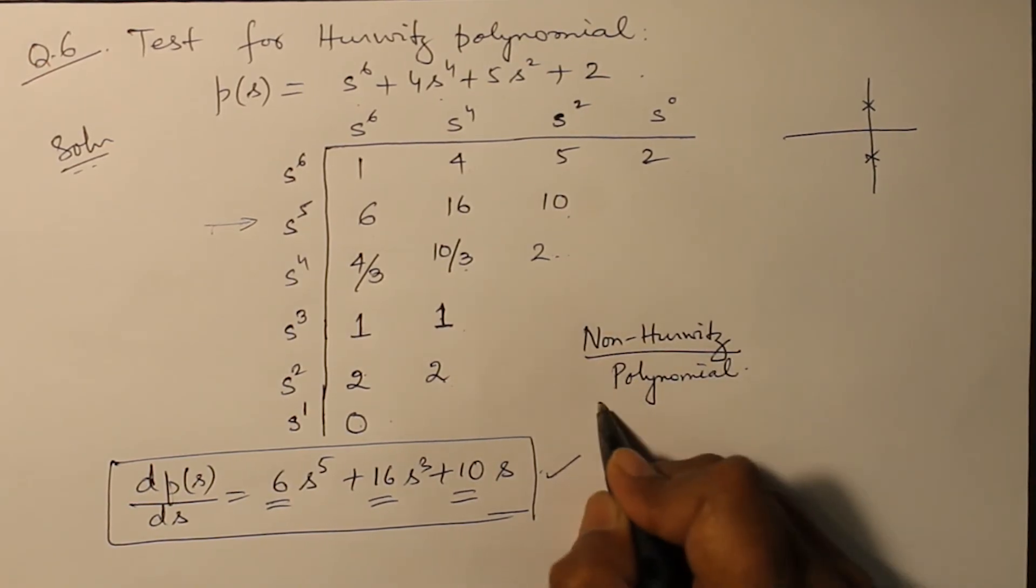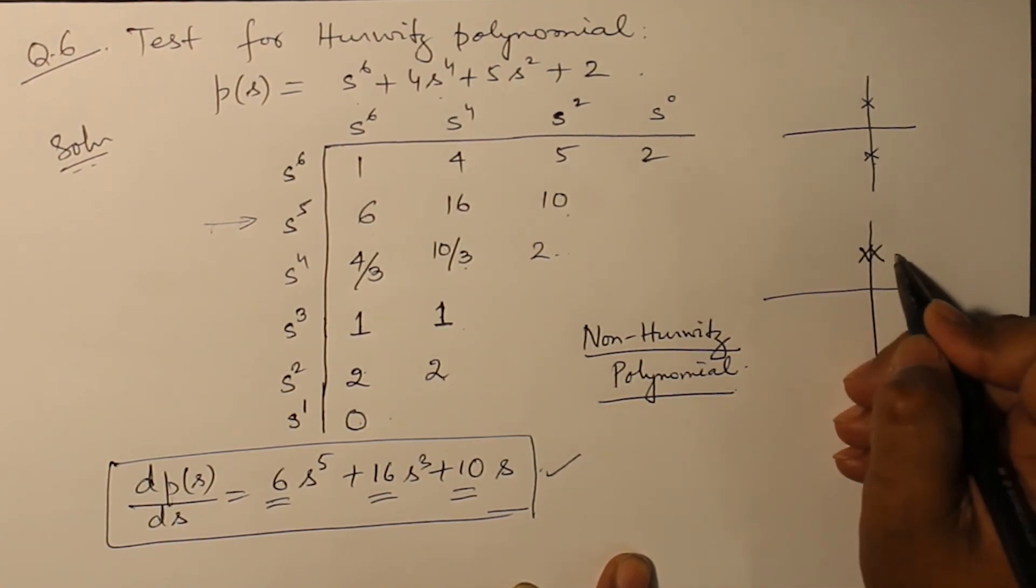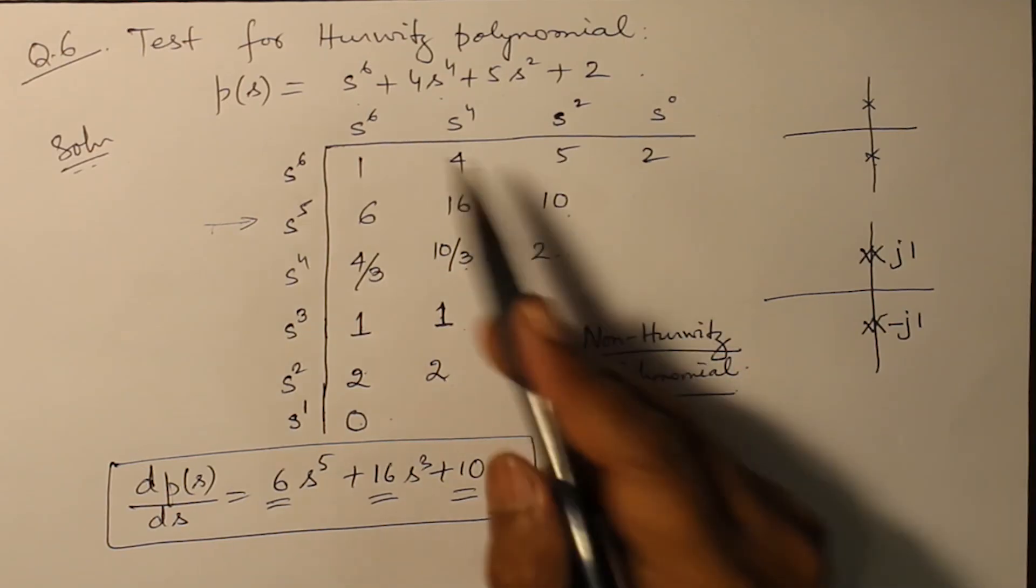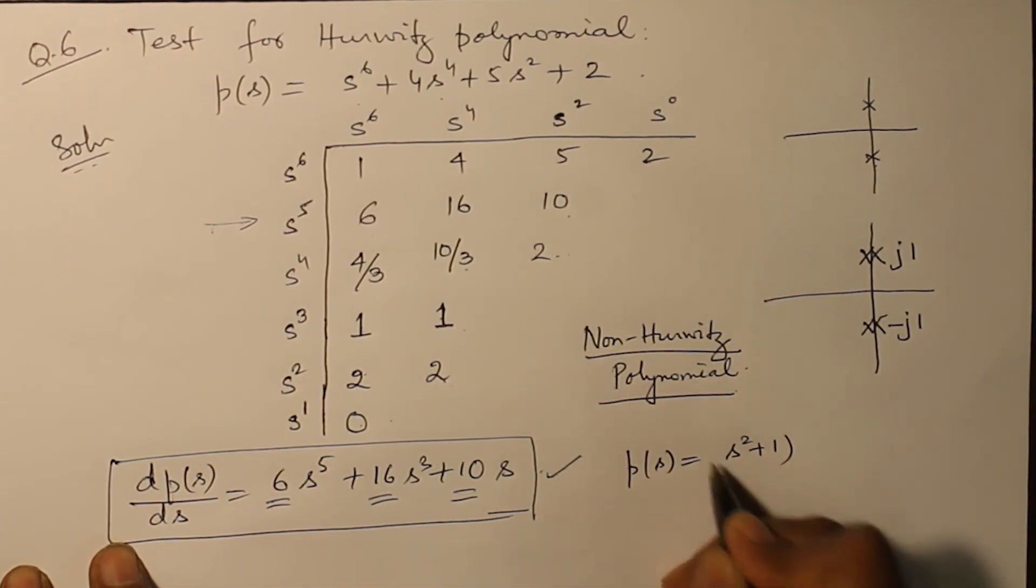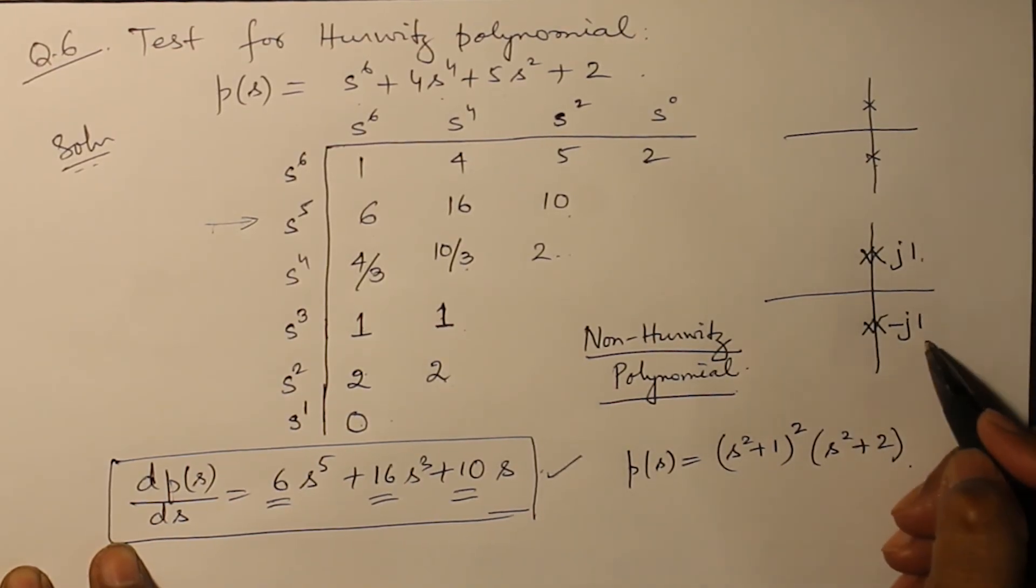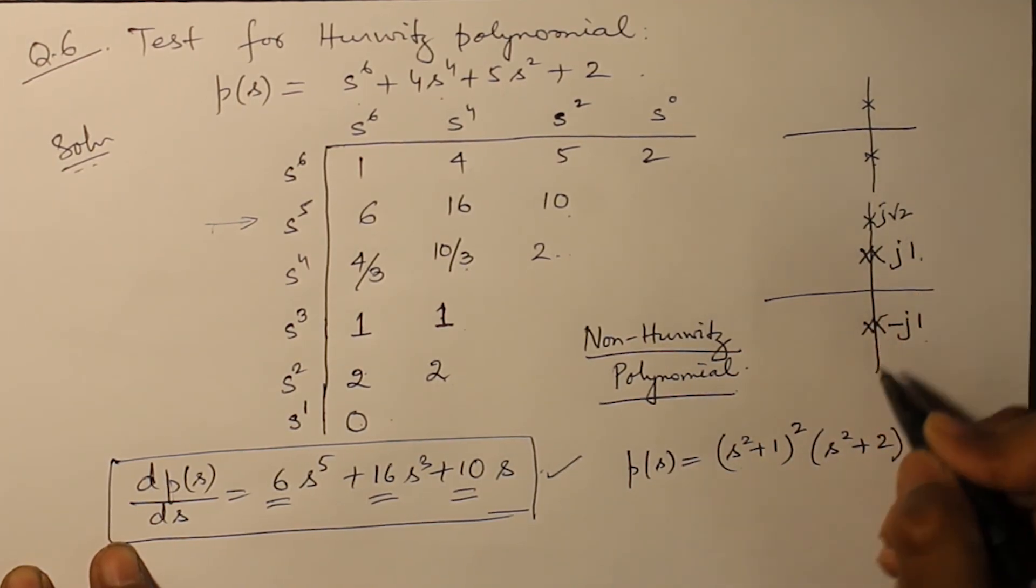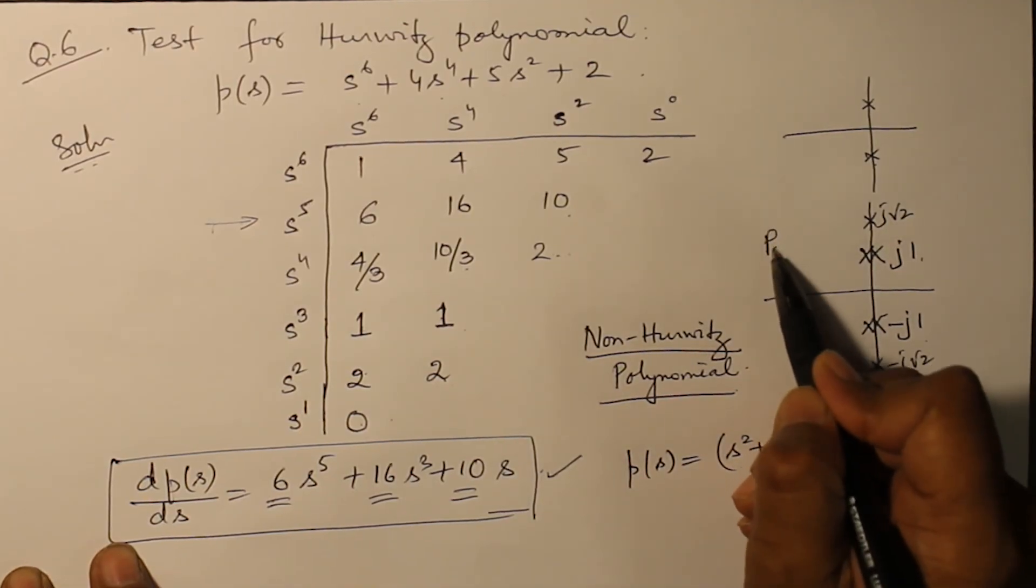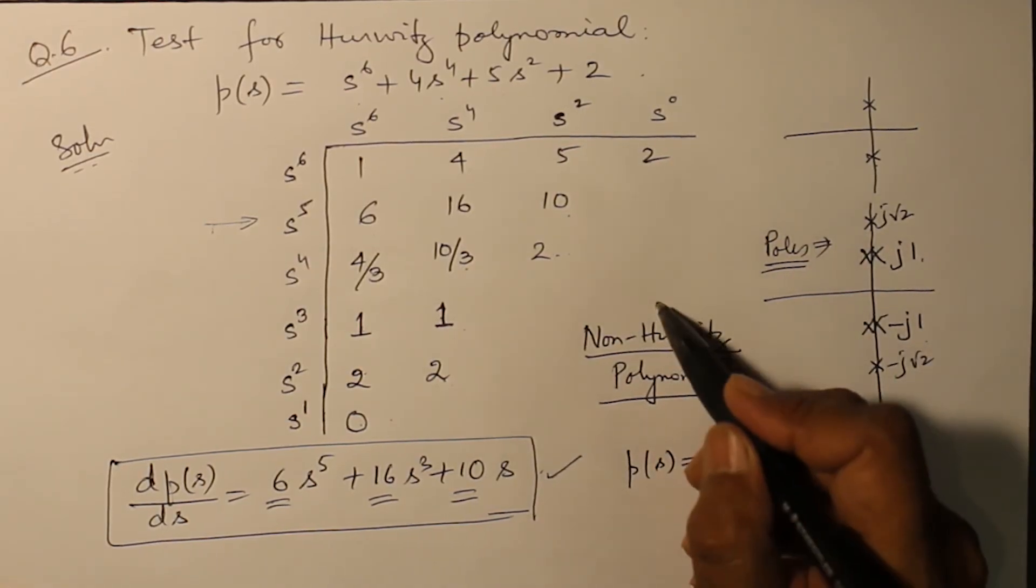Why is it a non-Hurwitz polynomial? Because it has multiple poles on the j omega axis. You can factorize it and find out that p(s) is basically equal to (s^2 + 1)^2 multiplied by (s^2 + 2). So at j1 and minus j1, there are two poles existing - multiple poles existing - and at j root 2 and minus j root 2, there are simple poles. So these are the locations of the poles. And here we find that there are multiple poles in this location, therefore it's a non-Hurwitz polynomial.